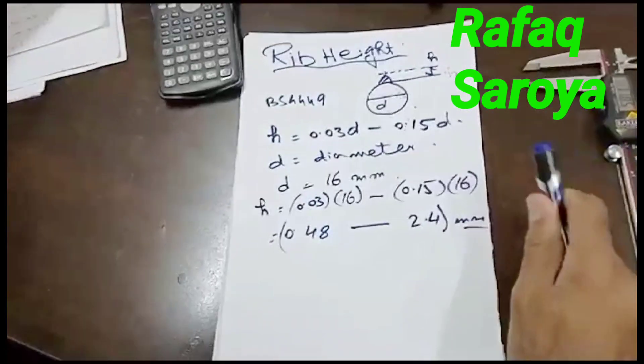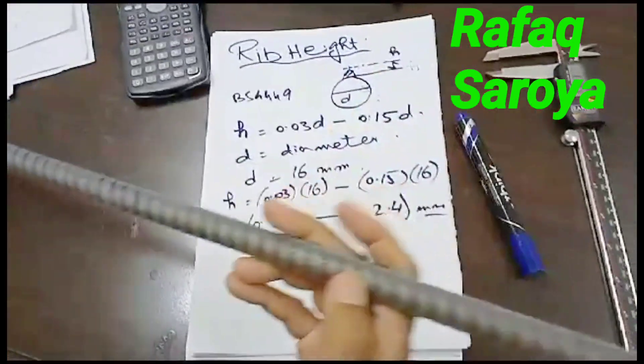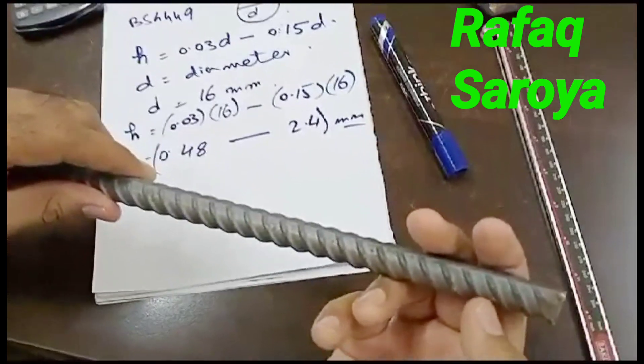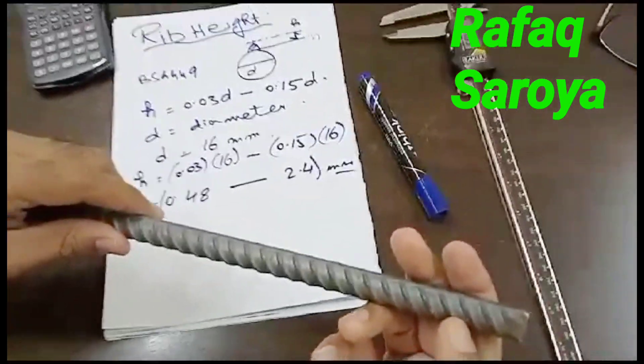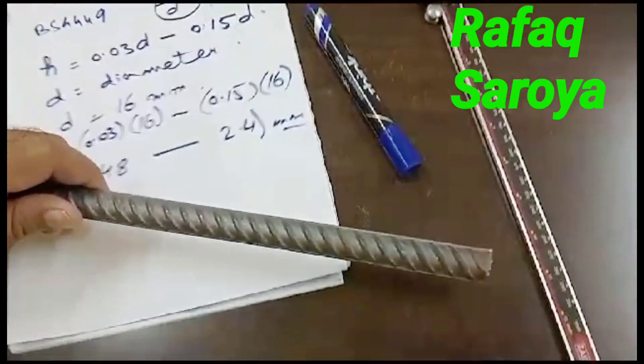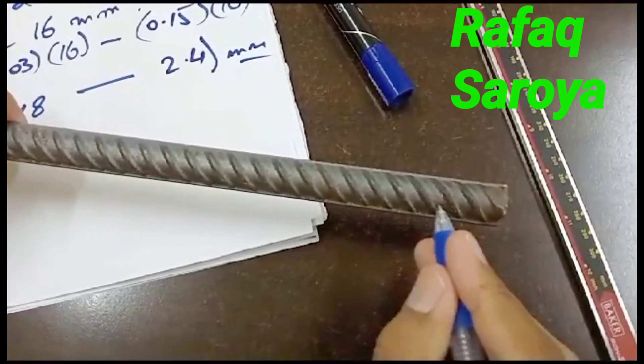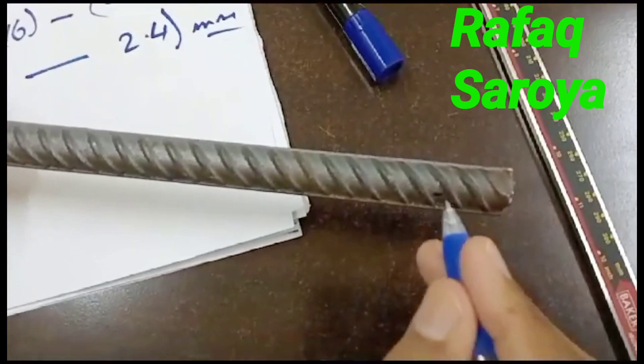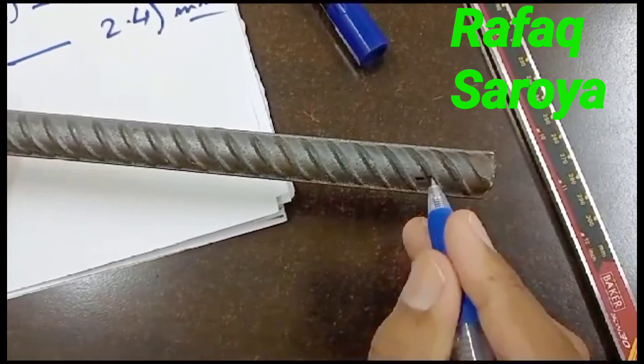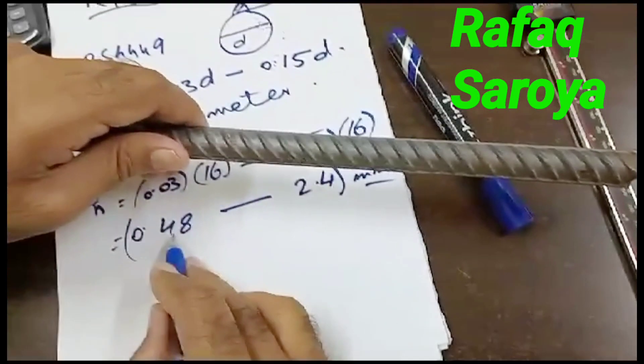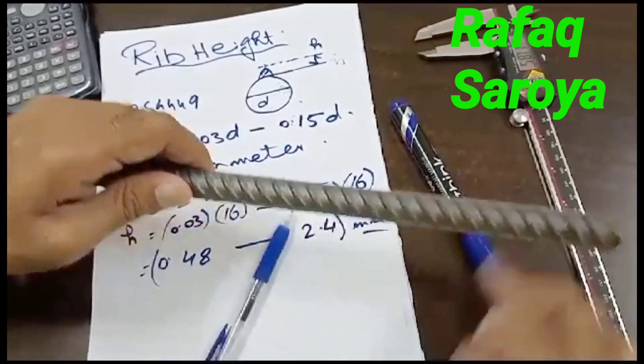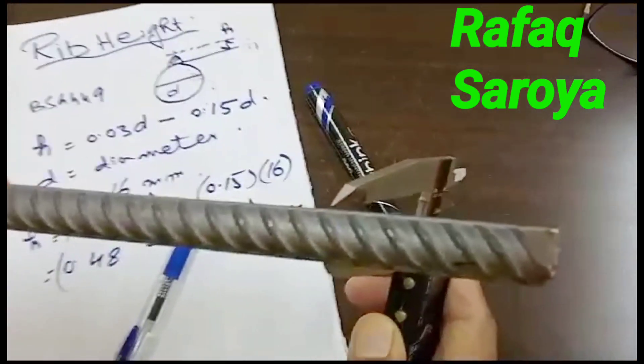Suppose I have this steel bar in my hand. This is the rib top position and this is our lower position. This portion is my core portion, and this is the top. And this distance from this to this, it will vary between 0.48 up to 2.4mm. We can find out its value very easily.